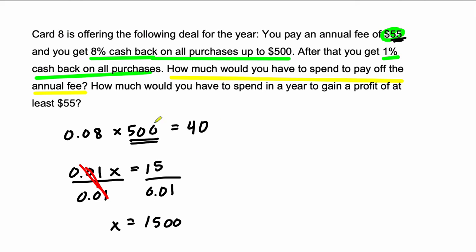So put this together, right? In order to pay off the annual fee, we had to spend $500 to get the first $40 and then $1,500 to get the rest. So that's $500 plus $1,500. We'd have to spend $2,000 here. All right, that's quite a bit. And that's the first part.